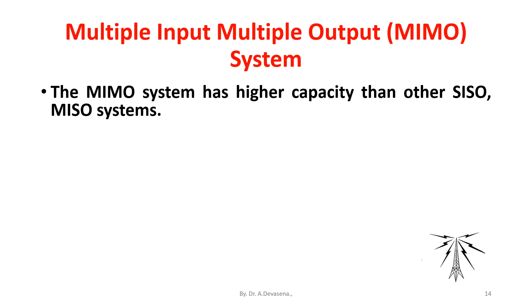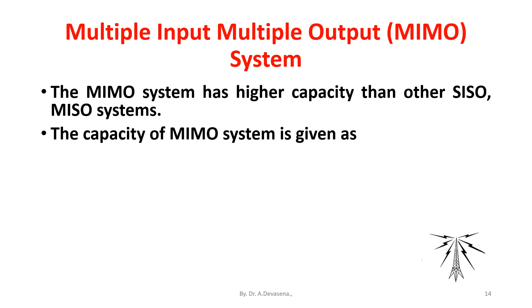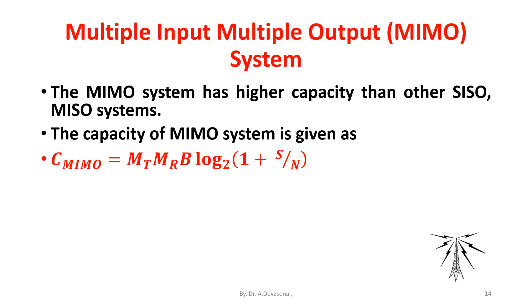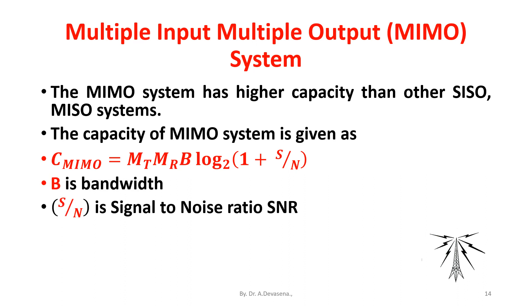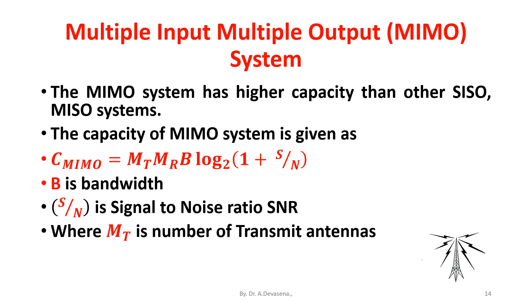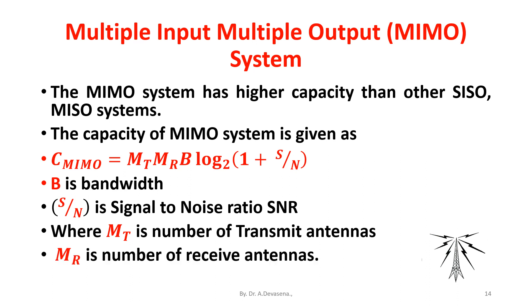The MIMO system has a higher capacity than other SISO or MISO systems. The capacity of the MIMO system is: C_MIMO = M_T × M_R × B × log₂(1 + S/N), where B is the bandwidth, S/N is the signal to noise ratio (SNR), M_T is the number of transmit antennas, and M_R is the number of receive antennas.